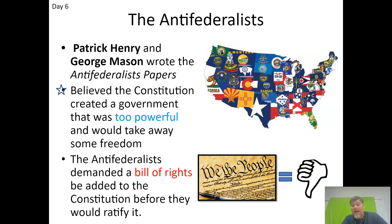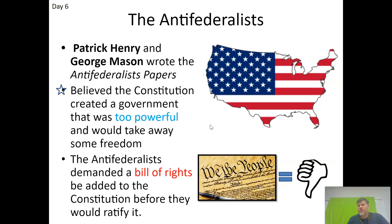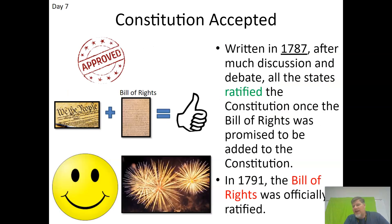Once the Federalists agreed to add a Bill of Rights, that tipped it over — enough Anti-Federalists supported it and it was passed. Ratification did take time; Rhode Island didn't ratify it for quite some time. But promising to add a Bill of Rights convinced people the Constitution would be workable. The Constitution was written in 1787, and the Bill of Rights was officially ratified in 1791.